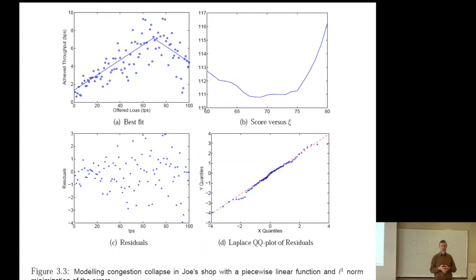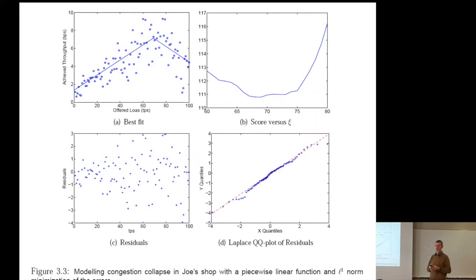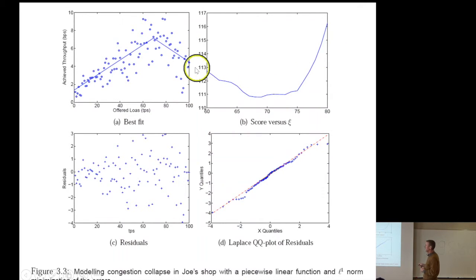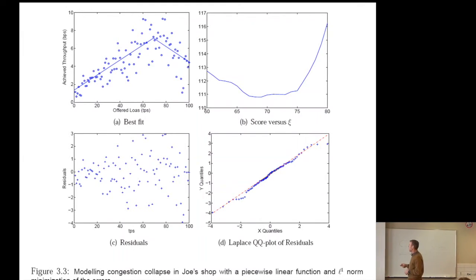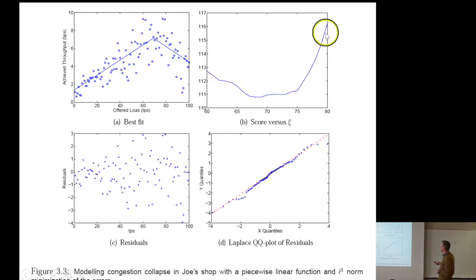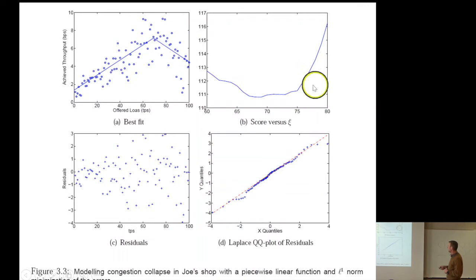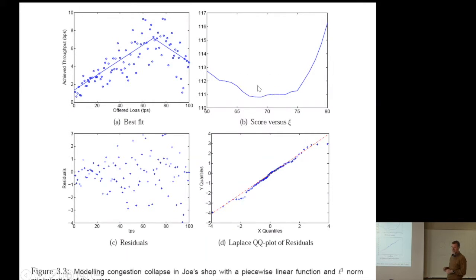If the turning point Xi is not known, we have a nonlinear problem. I solve this by assuming Xi is fixed and solving using the linear program, doing that for every value of Xi and recording the score — the value of the sum of absolute values of the error terms. Because we are more robust, we also have more uncertainty about the optimal value of Xi. The curve here is very flat: the minimum is 69, but the uncertainty is very large.